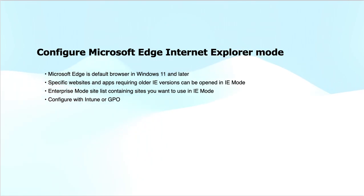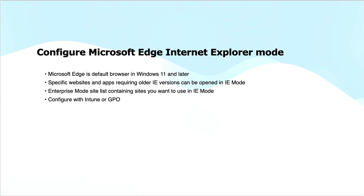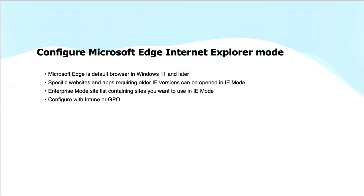You can configure IE mode and the Enterprise mode site list using Intune for mobile device management and Group Policy Objects for on-premises management. This helps IT administrators enforce consistent browser behavior across the organization.